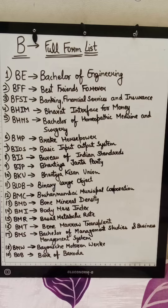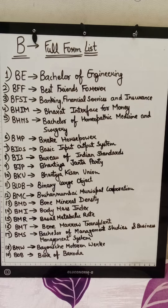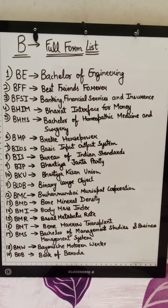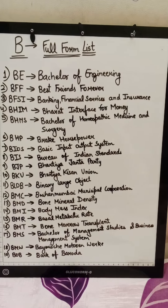Today, we are going to see B-E alphabet related to interesting full forms such as B-M-W, B-O-B, B-M-R. So here we are going to see these first of all.